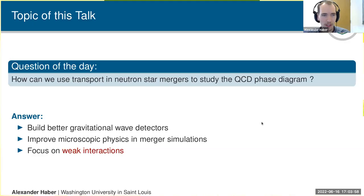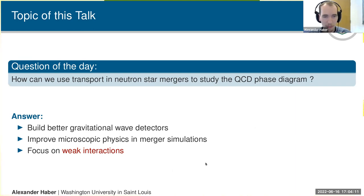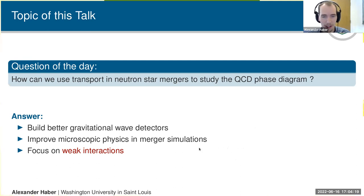The question I'm trying to answer today is: how can we use transport in neutron star mergers to study the QCD phase diagram? In a nutshell, we have to build better gravitational wave detectors, but also improve the microscopic physics that goes into merger simulations — especially focusing on the weak interactions.